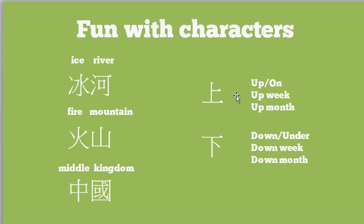You may not realize it, but you already know the pronunciation of this one. This is the character — the first part of the character for Shanghai, the biggest city in China — and it means 'on.' The second character in Shanghai is 'ocean.' So 'on the ocean' — again it's an example of how you can build up more complex words using simple characters.